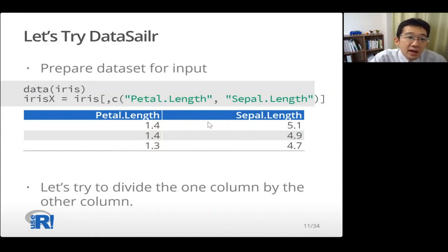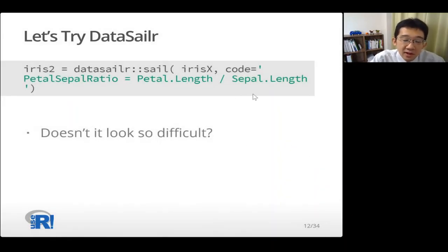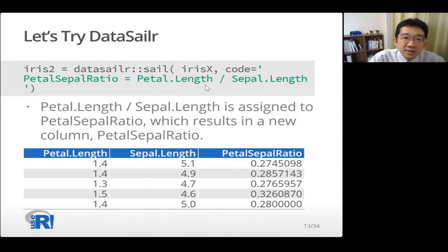Then let's try Data Sailr. In this example, I'm going to use Iris data set, and only these two columns, petal.length and sepal.length will be used. I'm going to call this Iris-based DataFrame IrisX. So let's try to divide this column by this column. How can I do it? Yes, passing IrisX data set and passing Sailr script. Maybe you can imagine what this Sailr script does. Petal.length divided by Sepal.length is assigned to petal_sepal_ratio, which actually results in a new column.